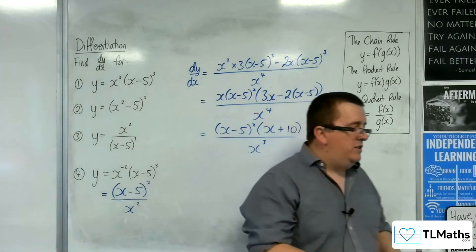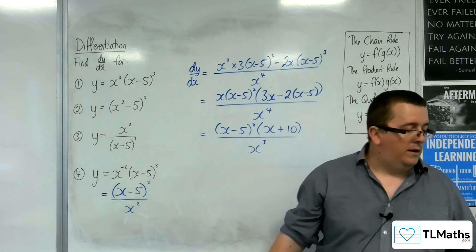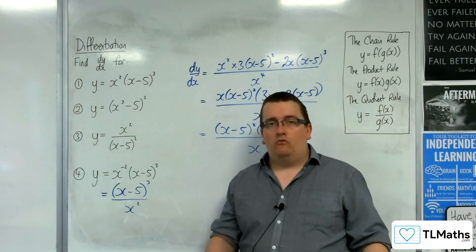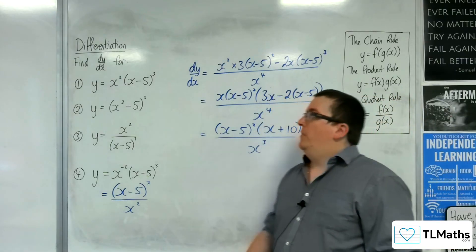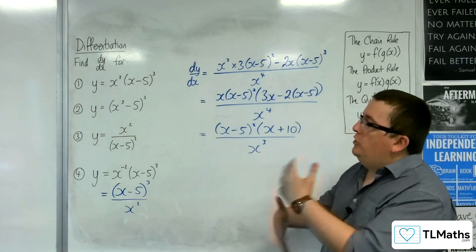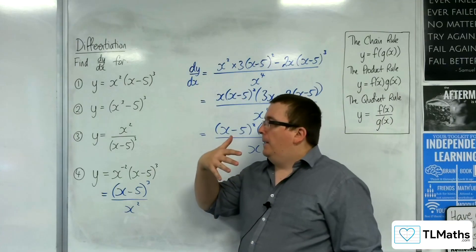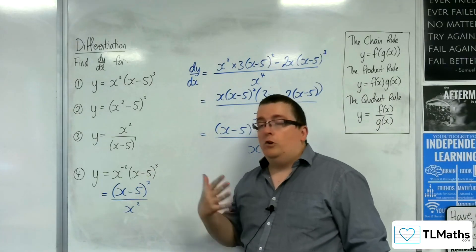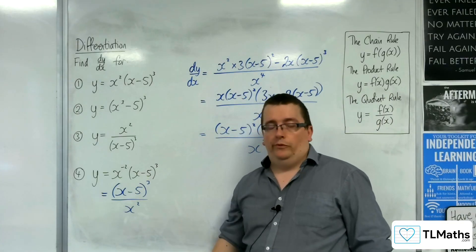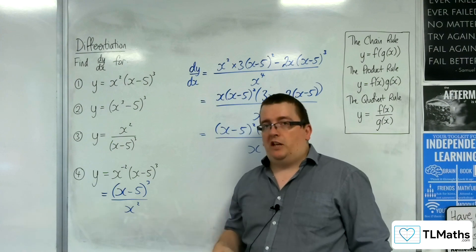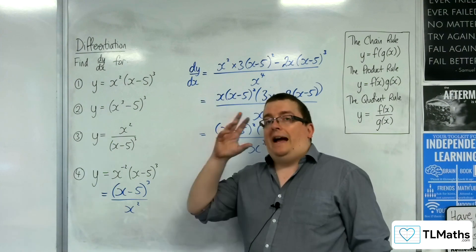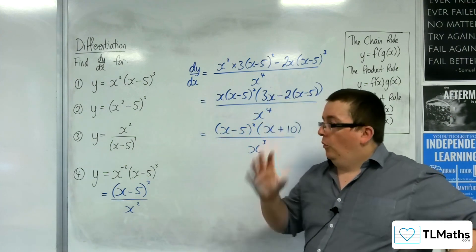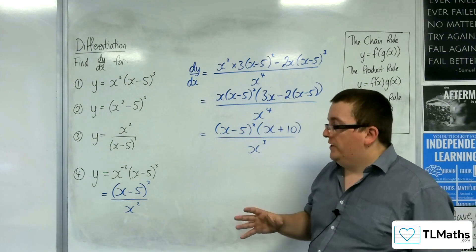The quotient rule is given to you in the formula booklet, so there's no reason to get it wrong. That's how you should start to be able to identify which rules to use in which circumstance. You won't always get this right first time — it just requires lots and lots of practice.